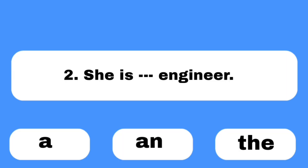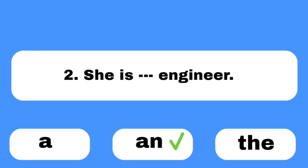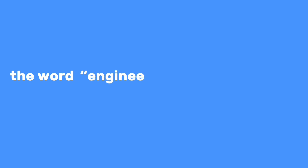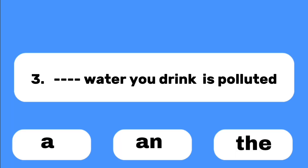Number two: She is ___ engineer. The word 'engineer' starts with a vowel sound 'e,' so 'an' is the correct answer: she is an engineer.